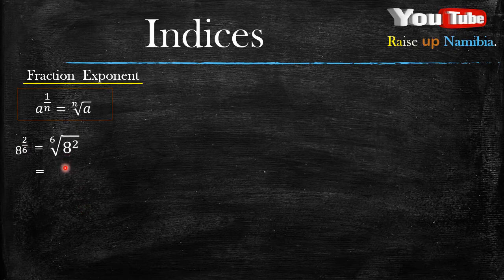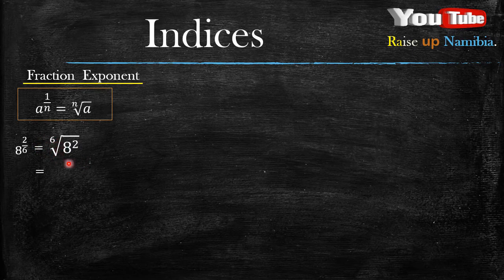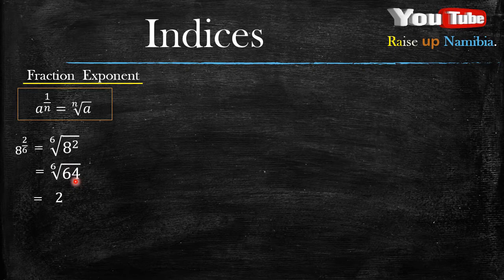Let's start working out. What is 8 raised to the power 2? You can also start outside by finding the root, but let's start inside for this video. 8 raised to the power 2 gives you 64. Now we can deal with the root. What is the 6th root of 64? It gives us 2.